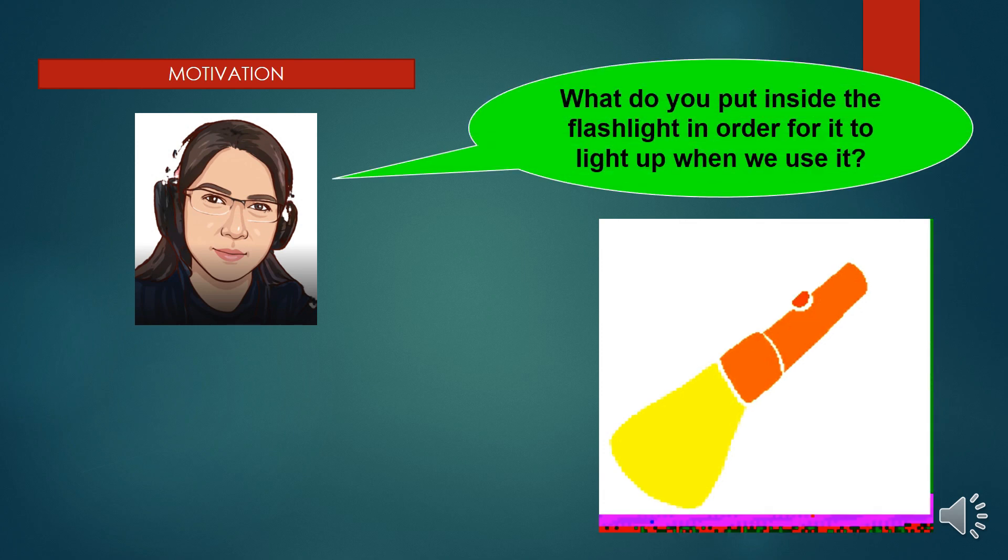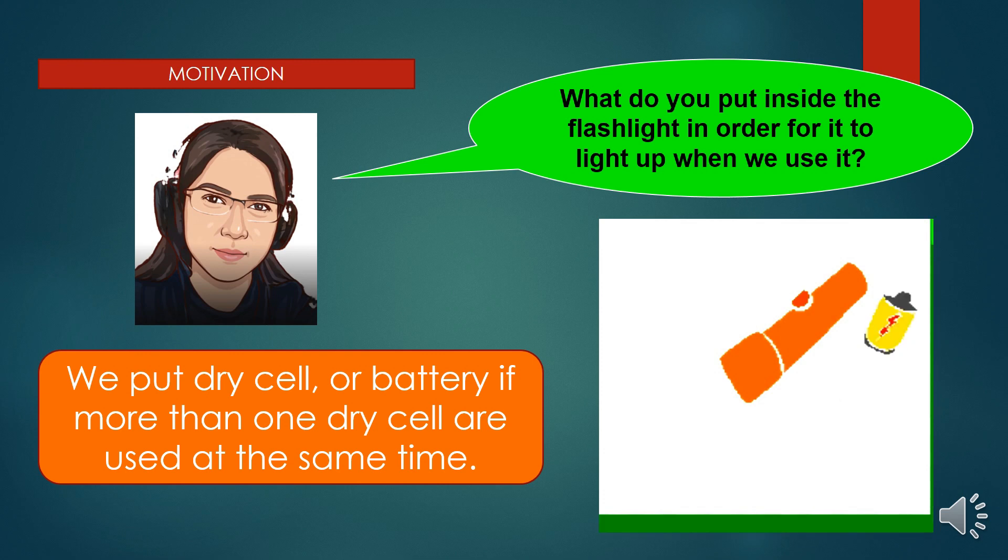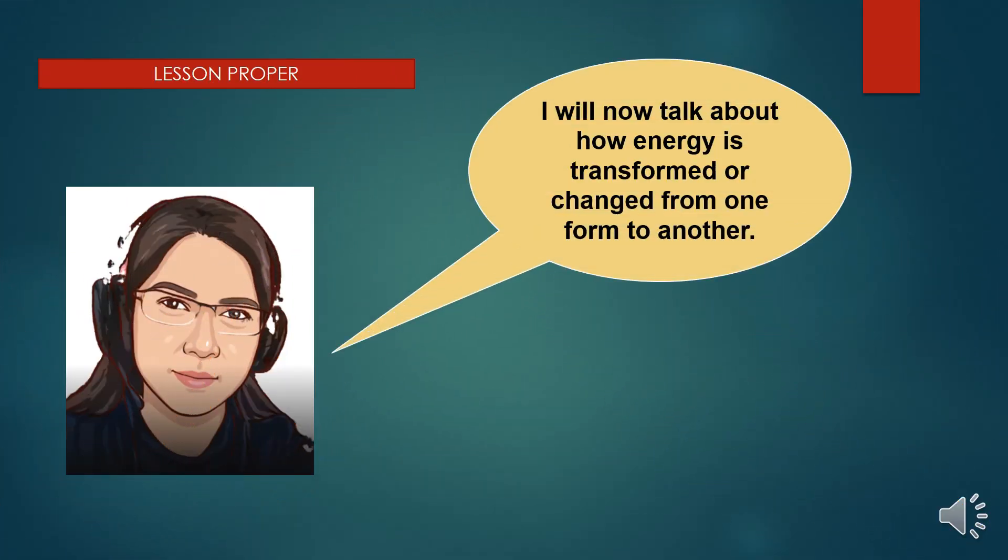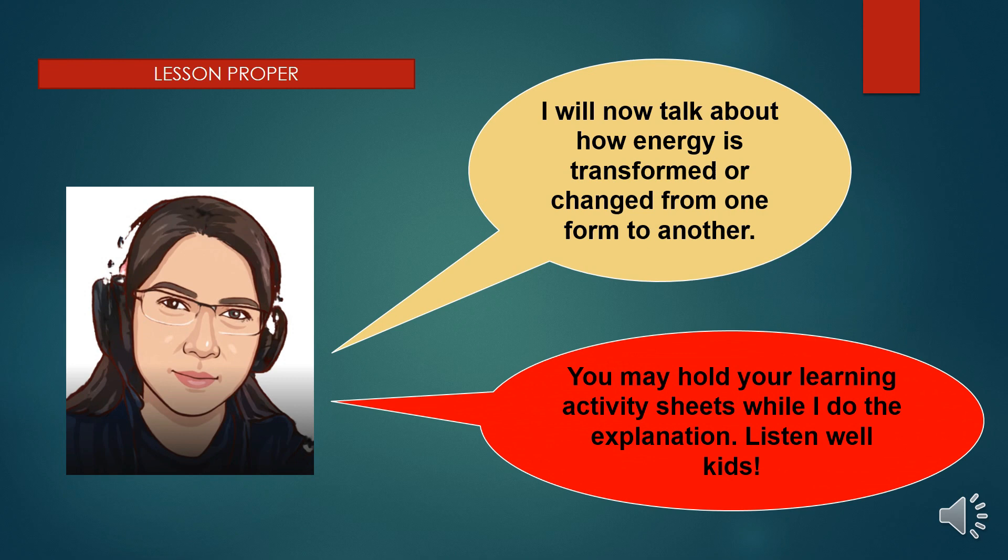What do you put inside a flashlight in order for it to light up when we use it? Yes, we put dry cell, or battery if more than one dry cell are used at the same time. I will now talk about how energy is transformed, or changed from one form to another. You may hold your learning activity sheets while I do the explanation. Listen well, kids!